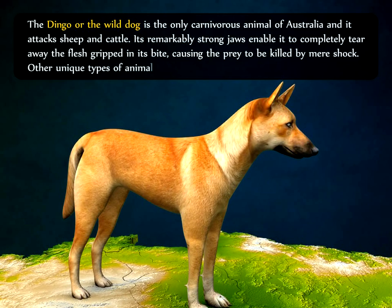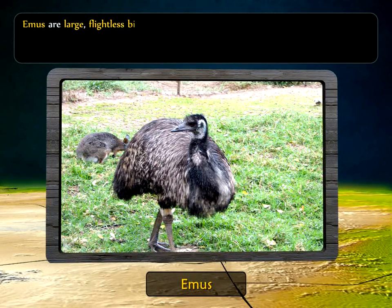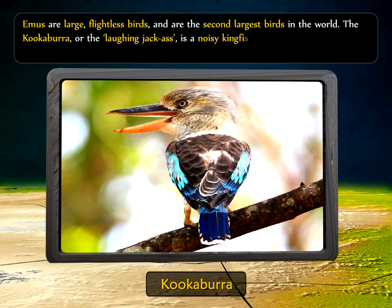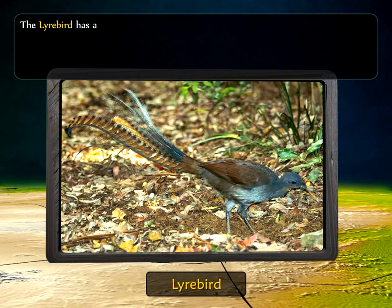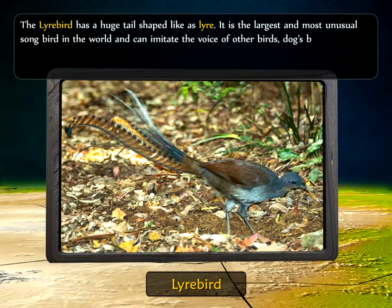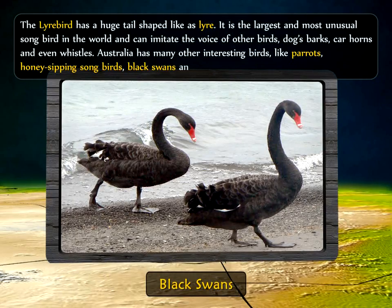Other unique animals found here include the possum and the echidna. Emus are large flightless birds similar to ostriches and are the second largest birds in the world. The kookaburra, also known as the laughing jackass, is a noisy kingfisher that makes loud laughing and barking sounds. The lyrebird, found only in Australia, has a huge tail shaped like a lyre, a musical instrument. It is the largest and most unusual songbird in the world. The bird sings well and can imitate the voices of other birds, dogs' barks, car horns, and even whistles. Australia has many other interesting birds like many kinds of parrots, honey-sipping songbirds, black swans, and the golden whistler.